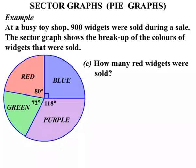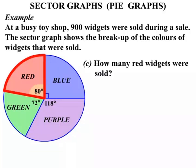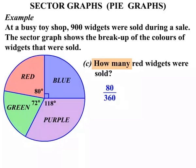The next one. How many red widgets were sold? We're back to our red sector. The fraction of course was 80 over the 360. But again the question is how many. 900 widgets all together, so this is the fraction we multiply by 900.